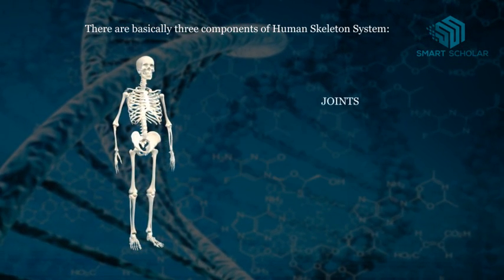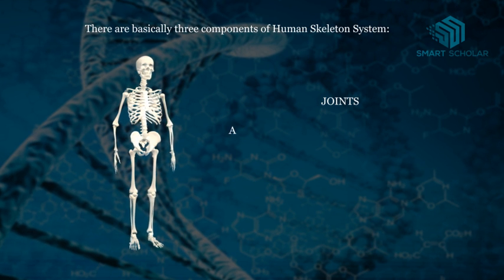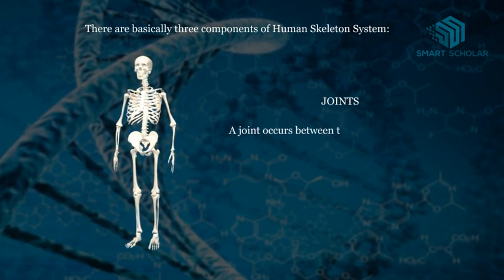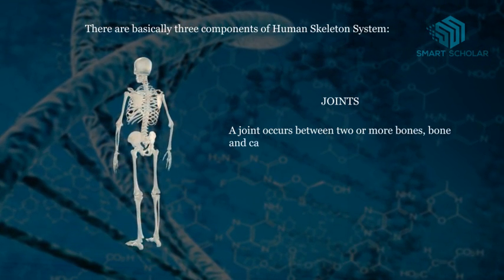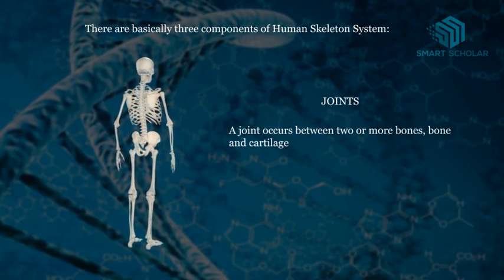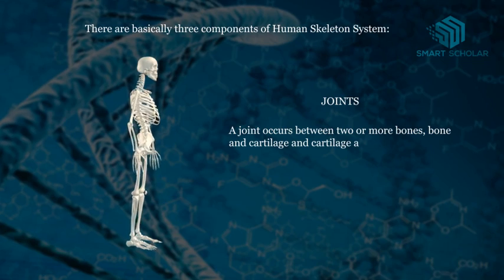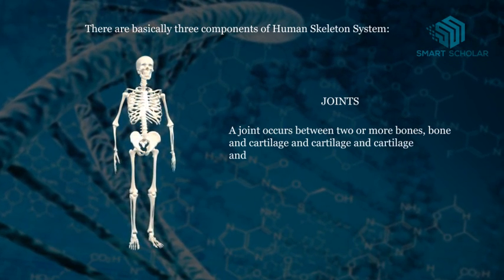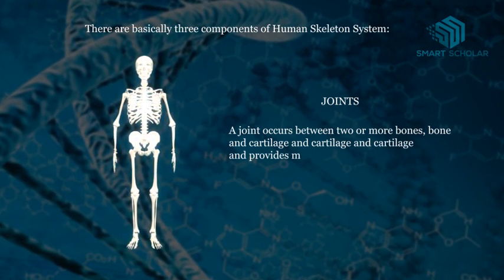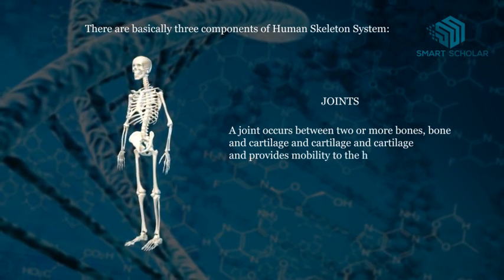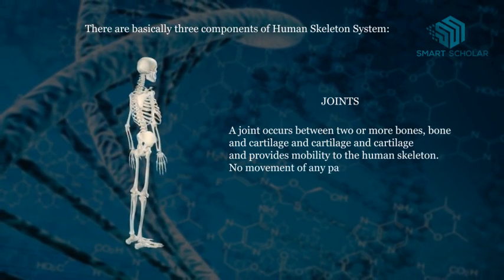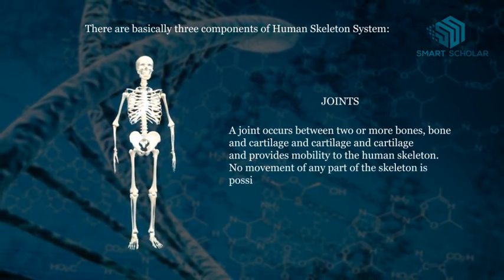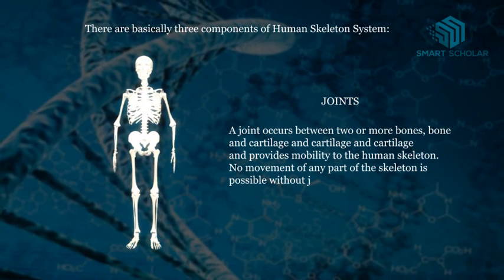Now let's get to learn about joints. A joint occurs between two or more bones, bone and cartilage, and also between cartilage and cartilage. It provides mobility to the human skeleton. No movement of any part of the skeleton is possible without joints.